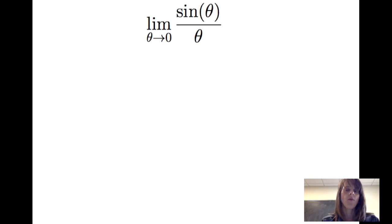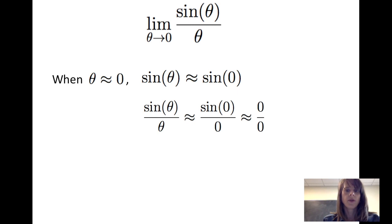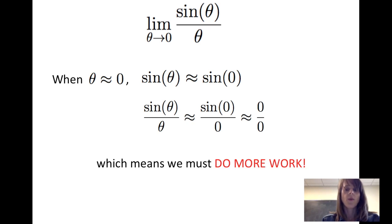Let's look more closely at the limit of sine of theta divided by theta as theta goes to 0. Recalling the definition of limit, we want to know what happens to sine of theta divided by theta when theta is close to 0. If we think about values of theta close to 0, the sine of theta is going to be close to the sine of 0, which is 0. So therefore, when I look at sine of theta divided by theta for theta close to 0, I'm going to get something that looks like 0 divided by 0, which means we must do more work.